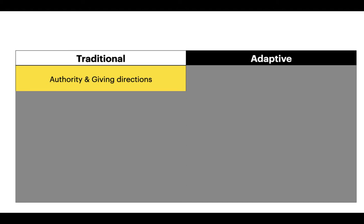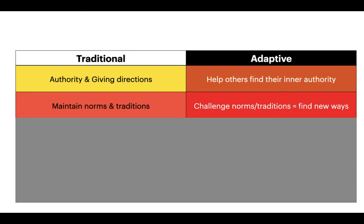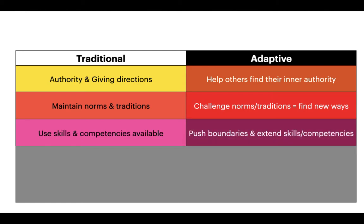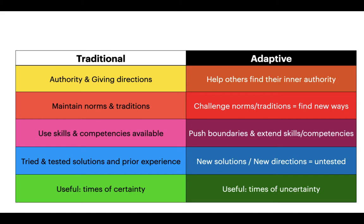Traditional leadership is about authority and giving directions; adaptive is about helping others find their inner authority. Traditional leadership maintains norms and traditions; adaptive challenges them and finds new ways. Traditional uses skills and competencies available; adaptive pushes boundaries and extends people's skills. Traditional relies on tried and tested solutions; adaptive finds new, untested directions. Traditional is useful in times of certainty; adaptive is useful in times of uncertainty, like a global pandemic.